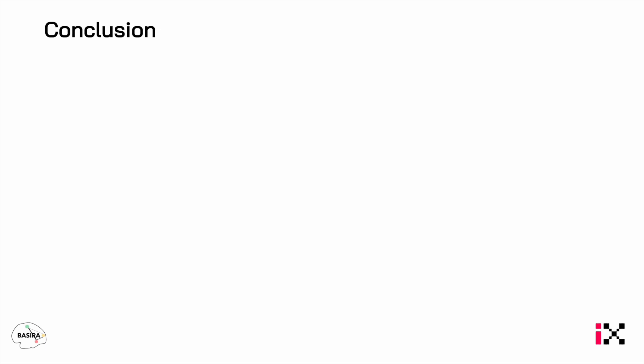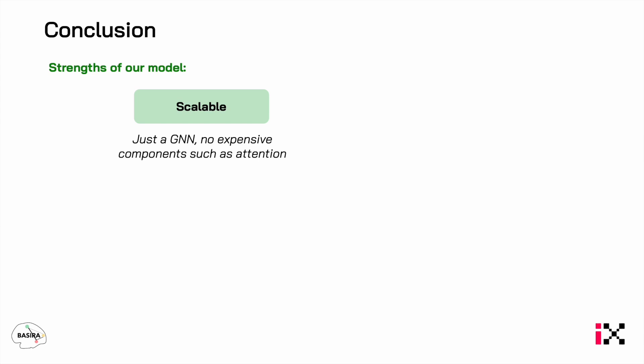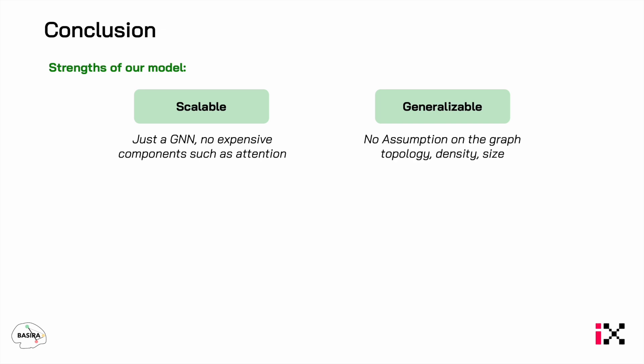Why is our model so good? It is scalable — it does not rely on expensive components such as attention. It is also generalizable, as it makes no assumptions on the graph topology, density, and size. Finally, DuoGNN opens the door towards new research directions.